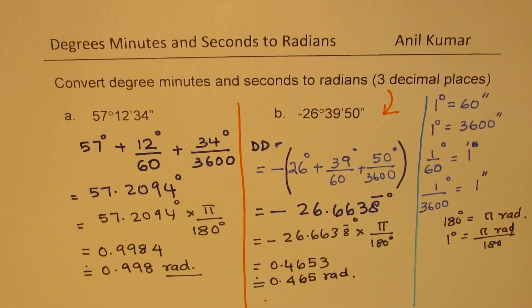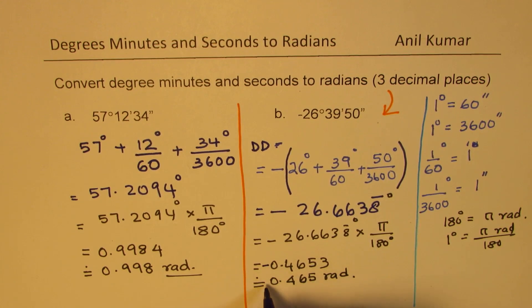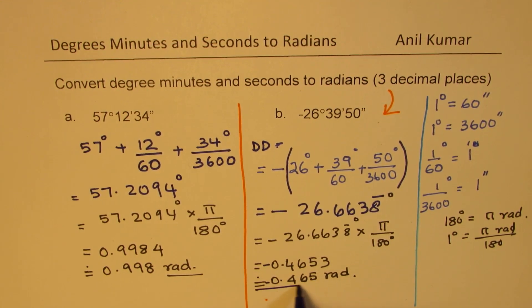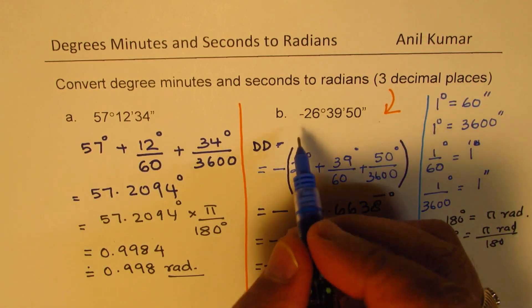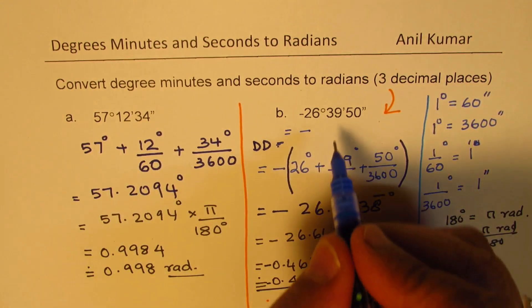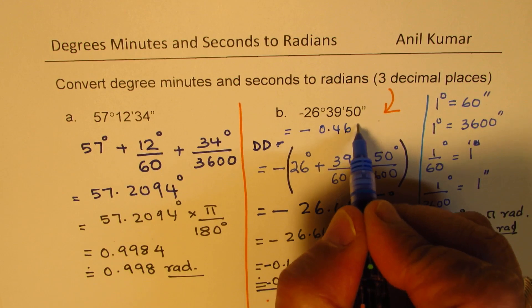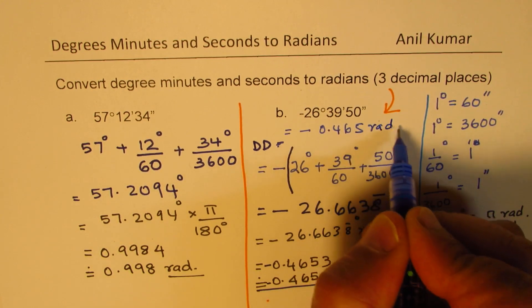Is that clear to you? And of course, it has to be negative. So don't forget that negative sign. So it will be equal to, let's write down again here, this will be equals to negative 0.465 radians.